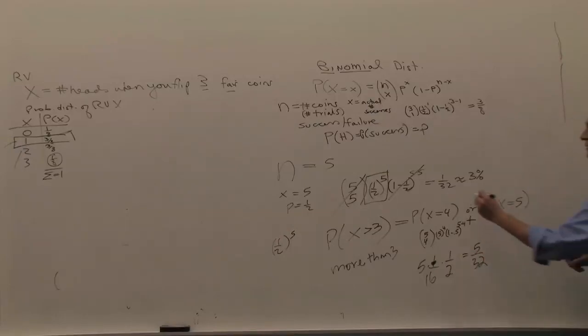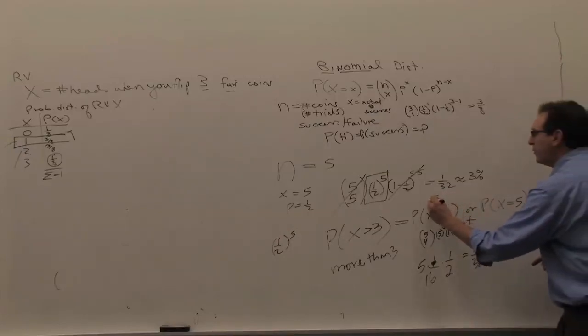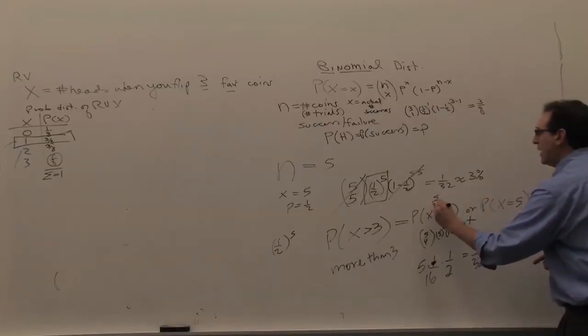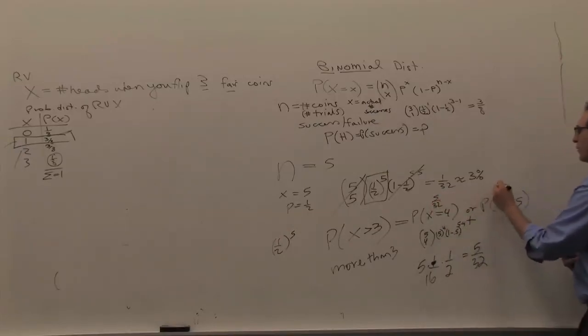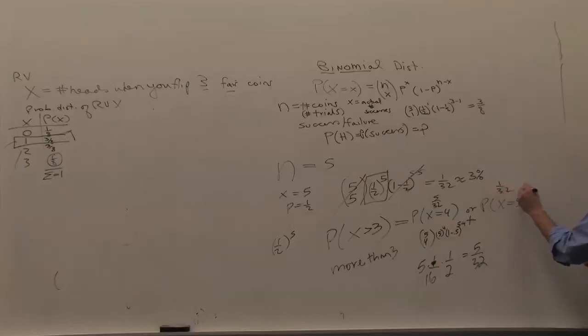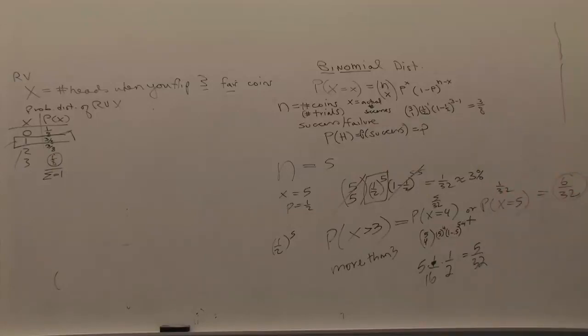So five times one out of 16 times one half is five out of 32. This gives us five out of 32, and the five-in-a-row result was one out of 32, so the final answer is six out of 32. When the book says more or less, you can get the answer by adding the individual probabilities together.